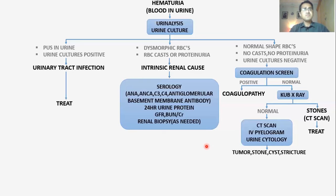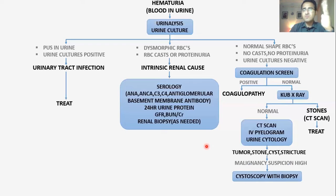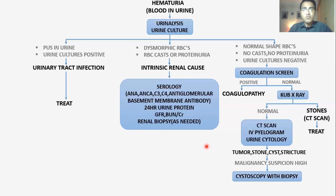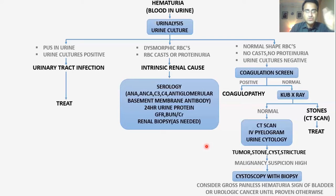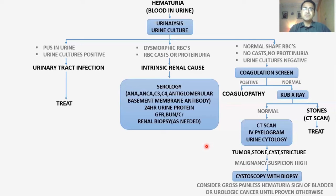Whenever the suspicion of malignancy is high, you have to straight away go for cystoscopy — using a scope to visualize the bladder and taking a biopsy. The classic presentation of bladder cancer is gross painless hematuria in an older person. Gross painless hematuria in an old patient should be considered a sign of bladder or urological cancer until proven otherwise, and cystoscopy should be performed immediately.